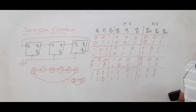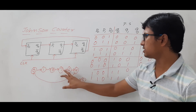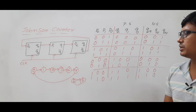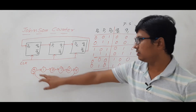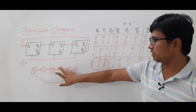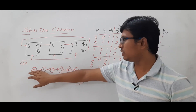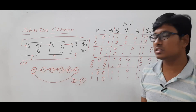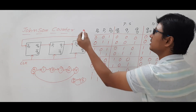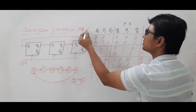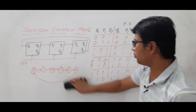All eight states are accounted for: 0, 1, 2, 3, 4, 5, 6, 7. Looking at the main sequence — 0, 1, 3, 7, 6, 4 and back to 0 — there are 6 states in this sequence, so this is a mod-6 Johnson counter.